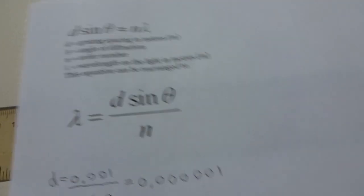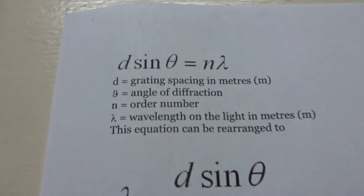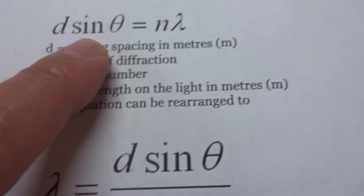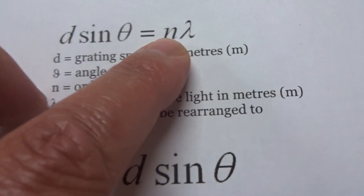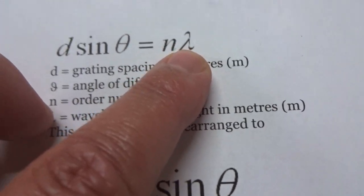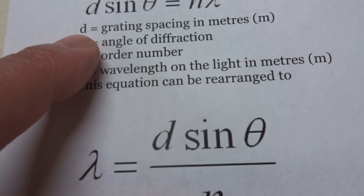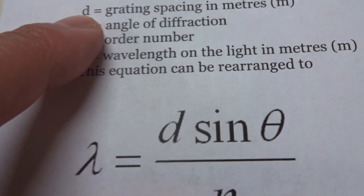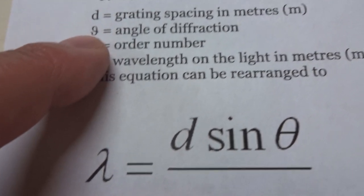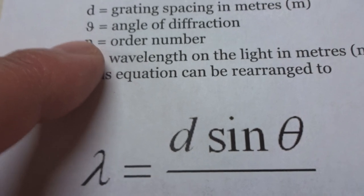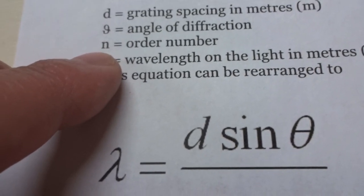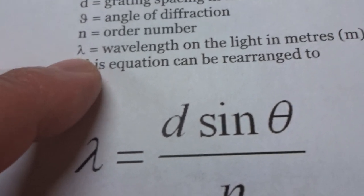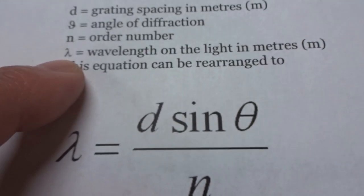We can store this into our equation. In our equation we have D sine theta equals N lambda, where D is the diffraction grating spacing in meters, theta is the angle of diffraction, N is the order number, and lambda is the wavelength of the light in meters.